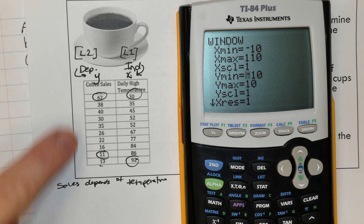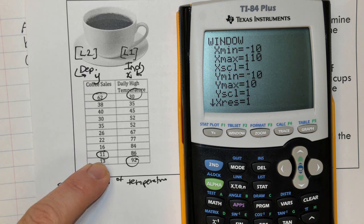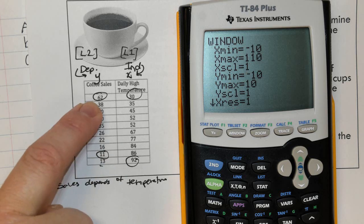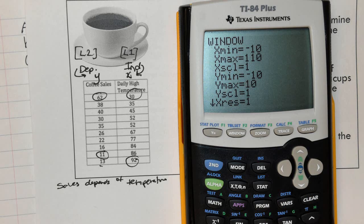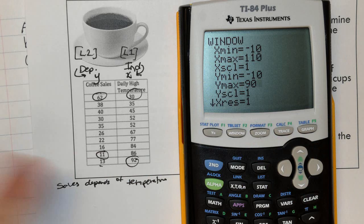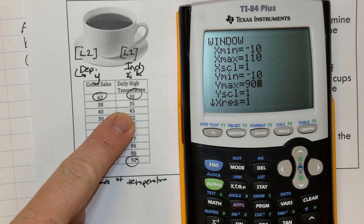Then I'm going to go to Y minimum. My Y's have to go at least down to 11, but they have to go over 62. So some number over 62, whether it be 80, 90, your choice. And now I want to see all these data points. What do they look like?